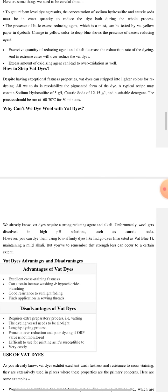Now we'll discuss a method for how we can strip vat dyes. Despite having exceptional fastness properties, vat dyes can strip into lighter colors for re-dyeing. All we have to do is re-solubilize the pigmented form of the dye. A typical recipe may contain sodium hydrosulfite 5 grams per liter, caustic soda 12-13 grams per liter, and a suitable detergent. And the process should be run at 60-70 degrees for at least 30 minutes.